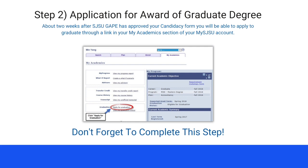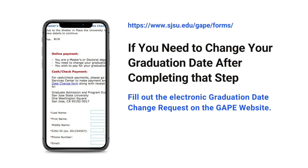If you need to update your address to receive your diploma, you can also do so through the link in your MySJSU. If you need to change your graduation date after you have already applied for graduation standing with GAAP, simply submit a Change of Graduation Date request online with the GAAP office. Refer back to the iSchool graduation pages on our website and choose Changing Graduation Date for a link to the online form.